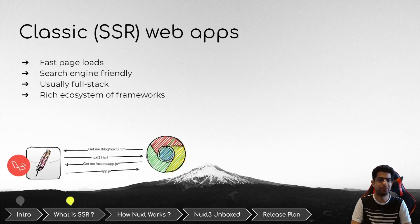These websites are fast because as soon as we get the response we can show it to the user. Also, it's easy for search engines to crawl these websites because they can get the content and see what's inside the page. There are lots of frameworks designed to create such applications, and writing code for them is easier because we write the same backend code and the code necessary for the presentation layer using the same language. Frameworks like Laravel or WordPress provide this possibility.